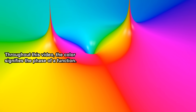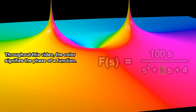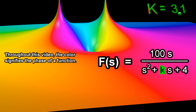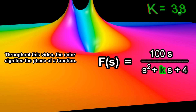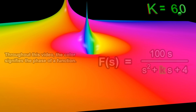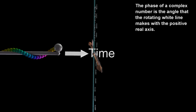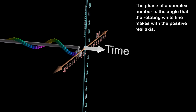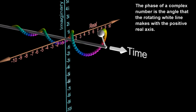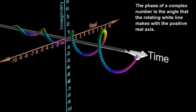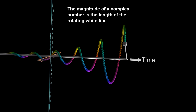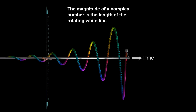Throughout this video, the color signifies the phase of a function. The phase of a complex number is the angle that the rotating white line makes with the positive real axis. The magnitude of a complex number is the length of the rotating white line.